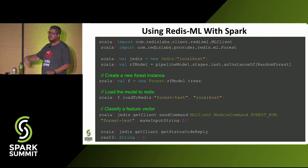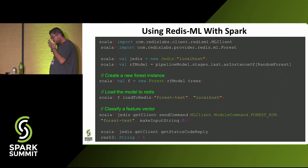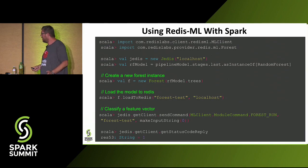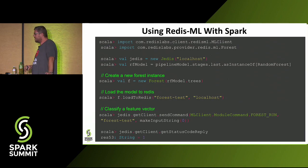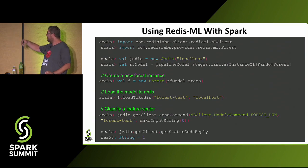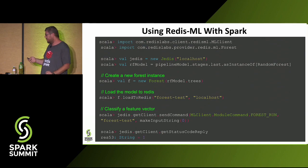This is how it looks on the Spark shell — it's very easy to use. After you've trained your model, you just create an instance of the Redis ML forest, then load it to Redis with a one-liner, and it is ready to serve your forest.